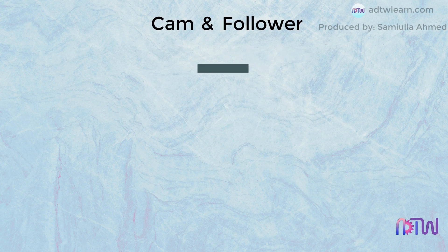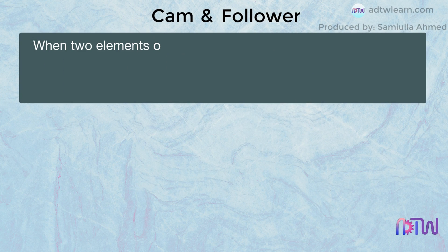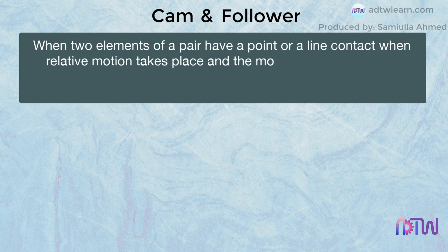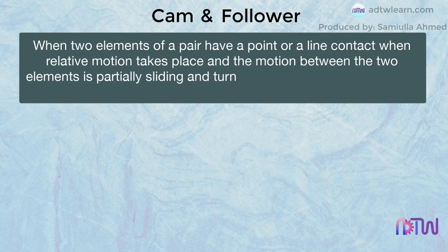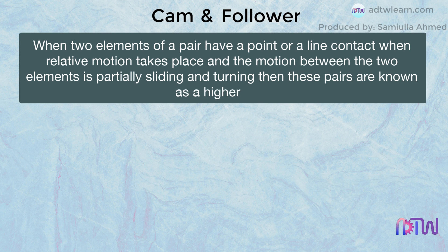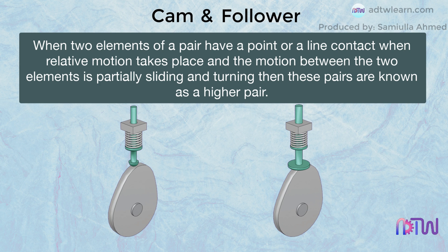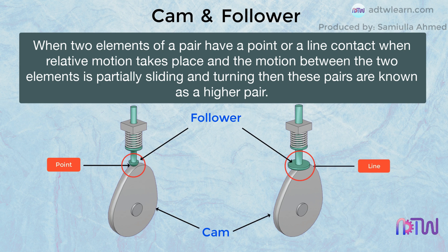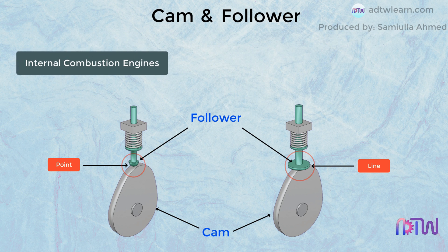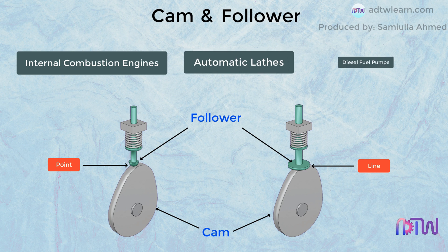Cam and follower: when two elements of a pair have a point or line contact when relative motion takes place, and the motion between the two elements is partially sliding and turning, then these pairs are known as a higher pair. Cam and follower are higher pairs since the contact between the cam and the follower is point or line contact. These cams and followers are used in internal combustion engines, feed mechanisms of automatic lathes, diesel fuel pumps, etc.